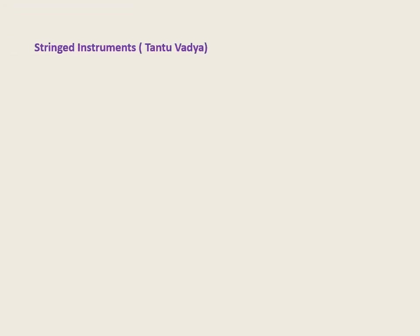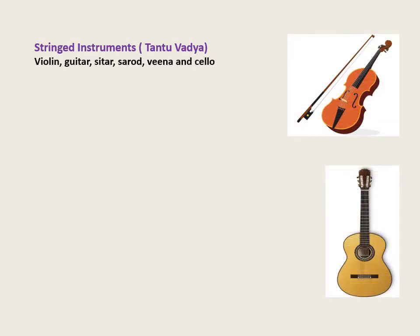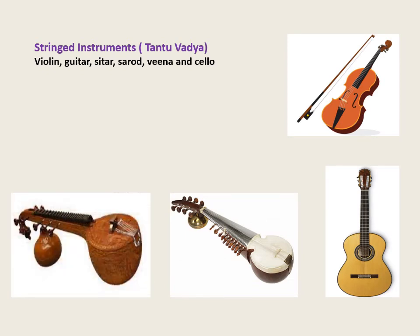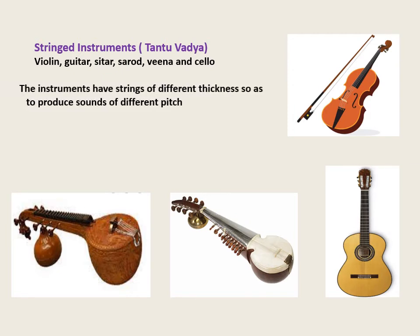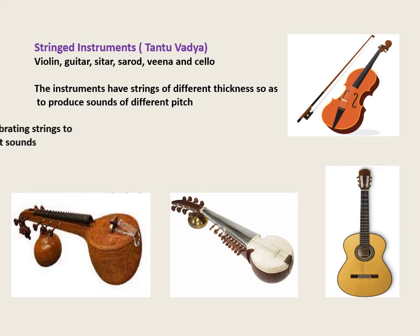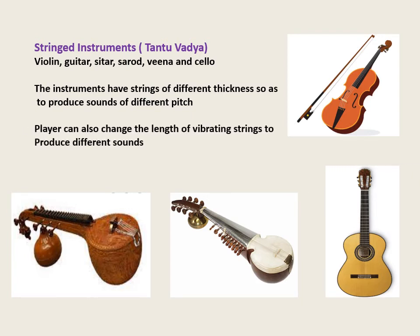String instruments such as violin, guitar, sitar, sarod, veena, and cello produce sound when the strings are set into vibration by plucking, striking, or by drawing a bow over these strings. These instruments have wooden frames which are partially hollow from within. They have strings of different thickness so as to produce sounds of different pitch. Moreover, the player can also change the length of vibrating strings to produce different sounds.